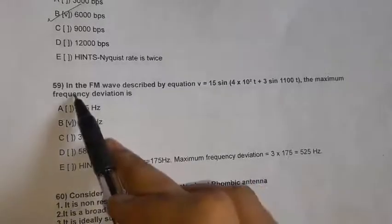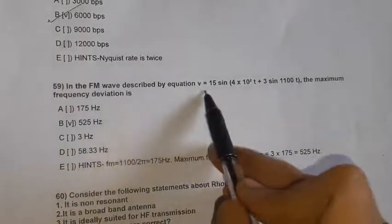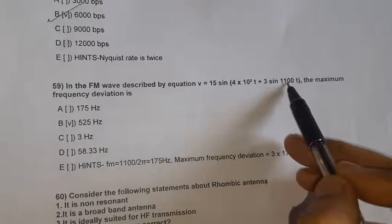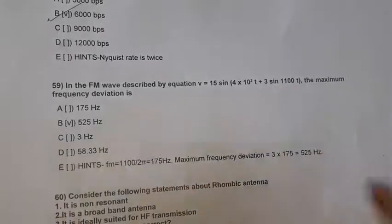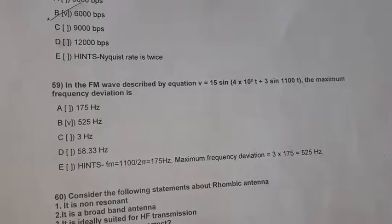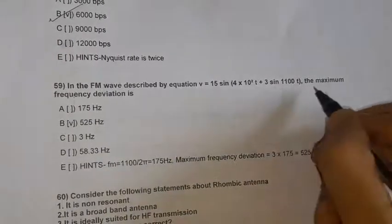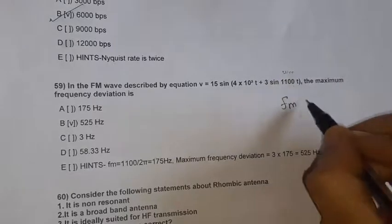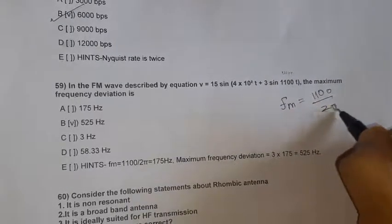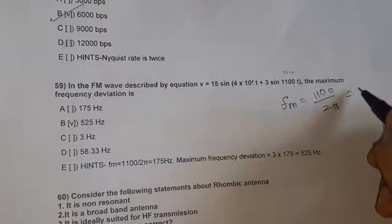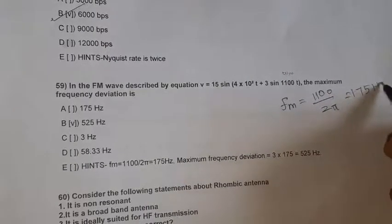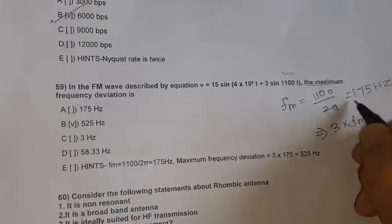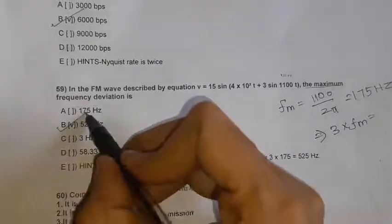Question 59: In the FM wave described by V equals 15 sine(4×10² t) plus 3 sine(1100t), find the maximum frequency deviation. FM is identified from the sine(omega_m × t) term. Dividing by 2 pi gives FM approximately 175 Hz. Maximum frequency deviation equals 3 into FM, so 3 into 175 equals 525 Hz.